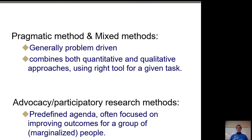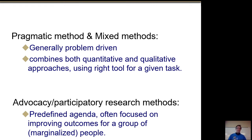There are pragmatic and mixed-method techniques, generally very problem-driven, rarely used in computer science but commonly used in social science. In CS, they're most commonly used when involving human factors or human subjects. Mixed methods look at both quantitative and qualitative approaches. For example, to figure out how good a user interface is, I can measure how long it takes people to do stuff, but I can also ask them how easy it was to use on a scale of 1 to 5. You start with qualitative data, turn it into quantitative, and get this combination. There are also advocacy or participatory research methods that start out with some agenda focused on improving outcomes for a group of often marginalized people — that limits the population, but it can still be a very large problem.